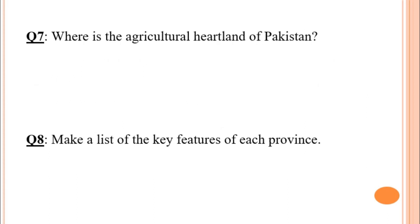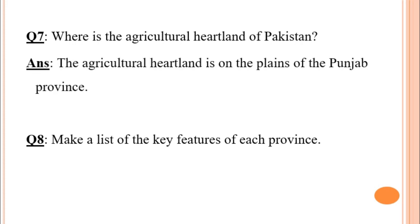Question number seven: where is the agricultural heartland of Pakistan? The answer is: the agricultural heartland of Pakistan is on the plains of the Punjab province.